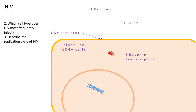In the cytoplasm, the reverse transcriptase binds to the RNA. This process is called reverse transcription, and remember, that's why HIV is called a retrovirus — because of this process of converting RNA to DNA.